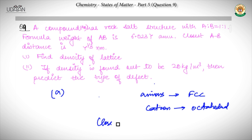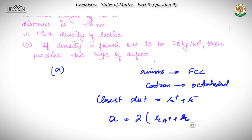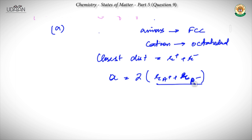The closest distance will be the radius of cation plus the radius of anion, given as y to the power 1/3 into 10 to the power minus 9 meter, that is nanometers. The edge length A will be twice the sum of the radius of cation and anion, coming out to be 2y to the power 1/3 into 10 to the power minus 9 meter.